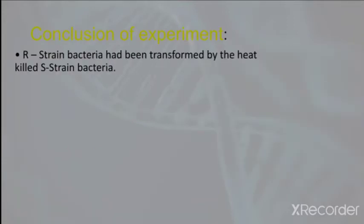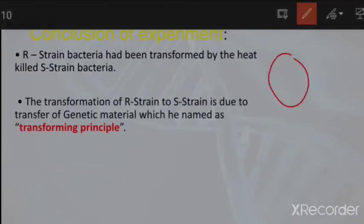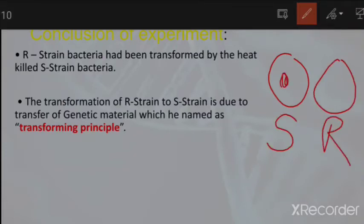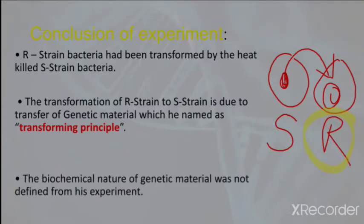Griffith concluded that the R strain bacteria had been transformed by the heat-killed S strain bacteria. Something from the S strain went into the R strain and transformed it — making the R strain virulent and harmful. For that reason, this principle is also known as the transforming principle. However, the biochemical nature of the genetic material was not defined by this experiment — what substance was being transferred from S strain to R strain remained unknown.